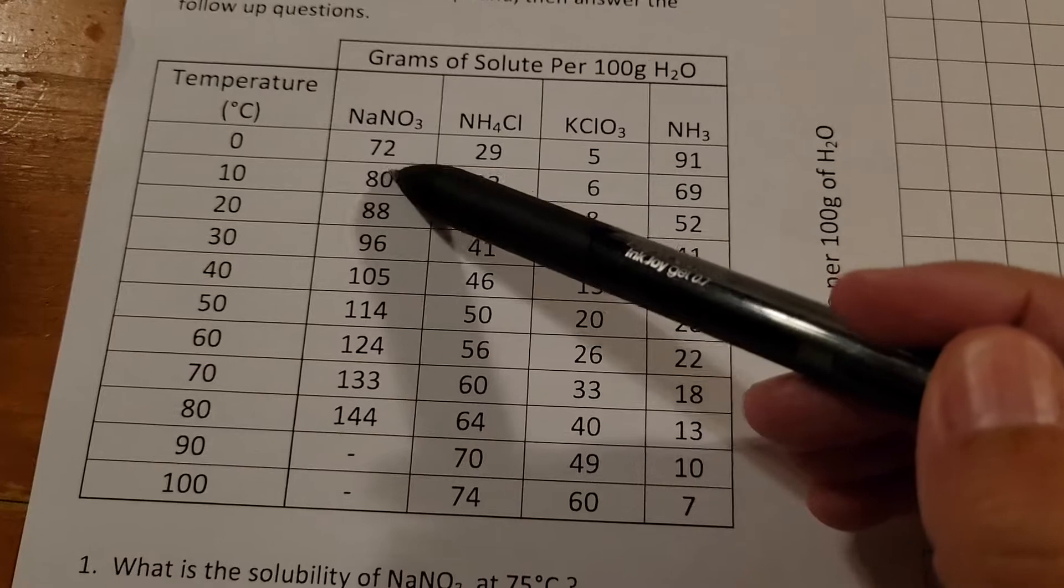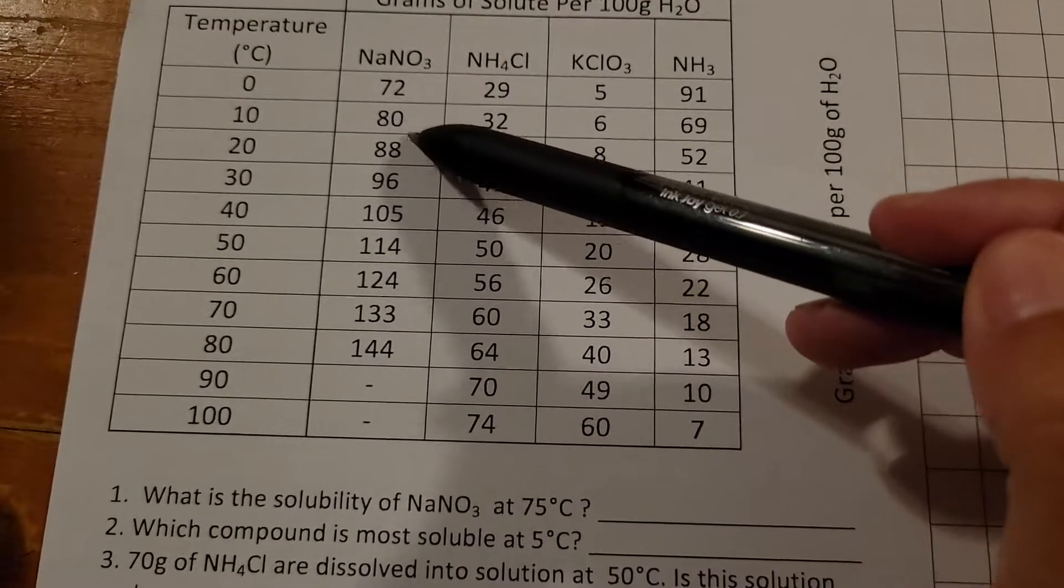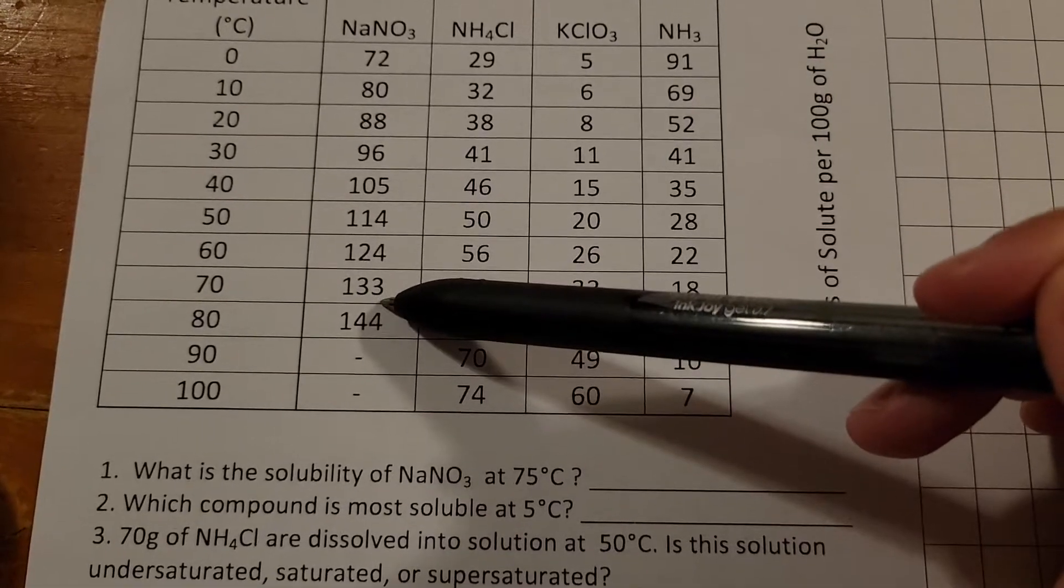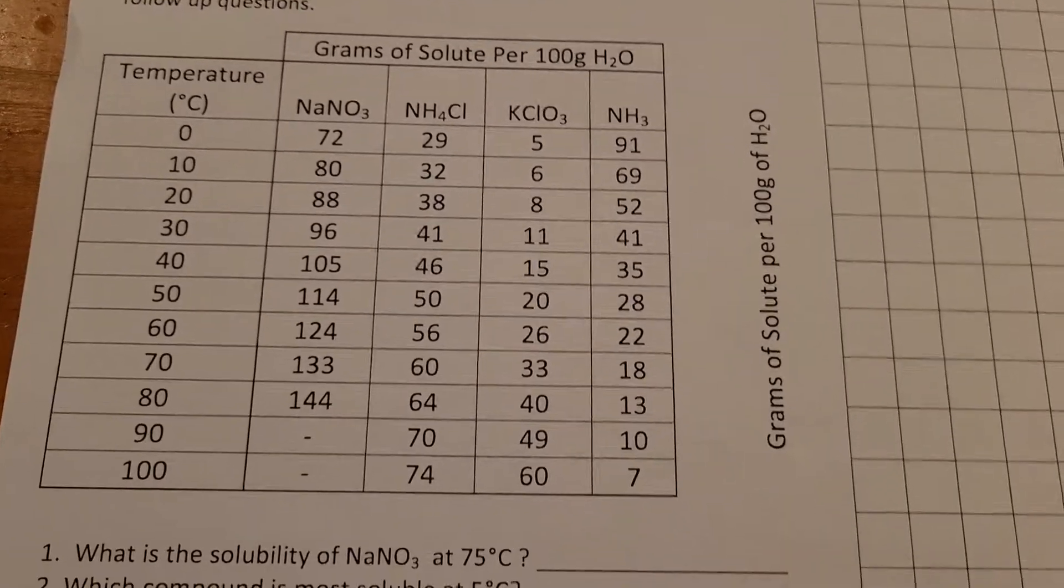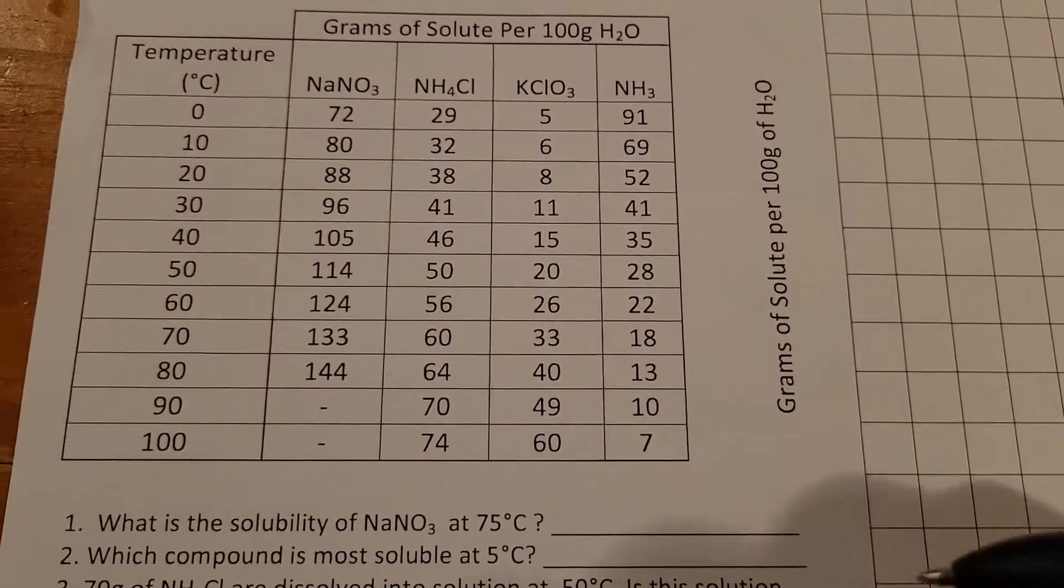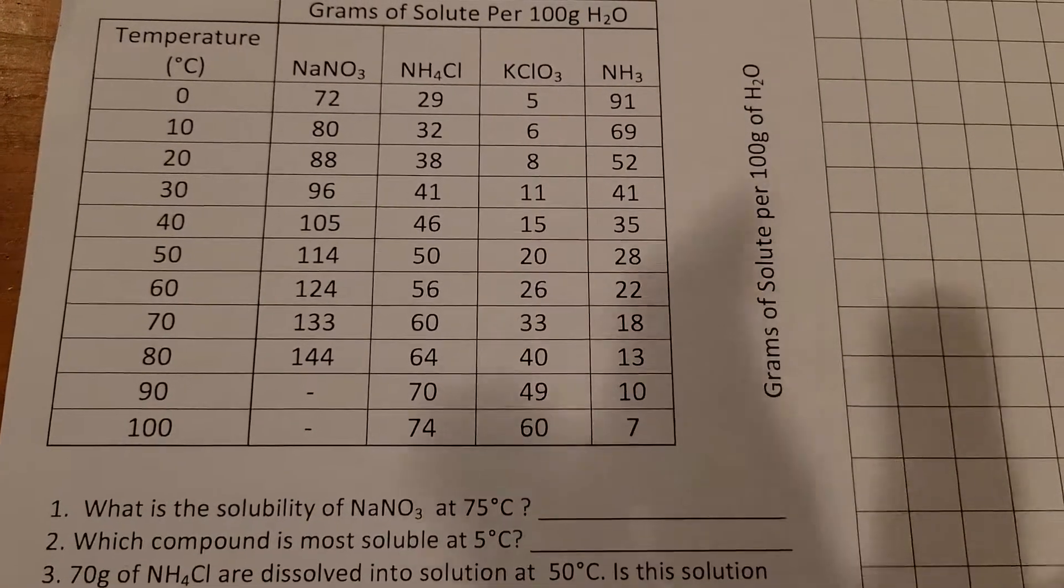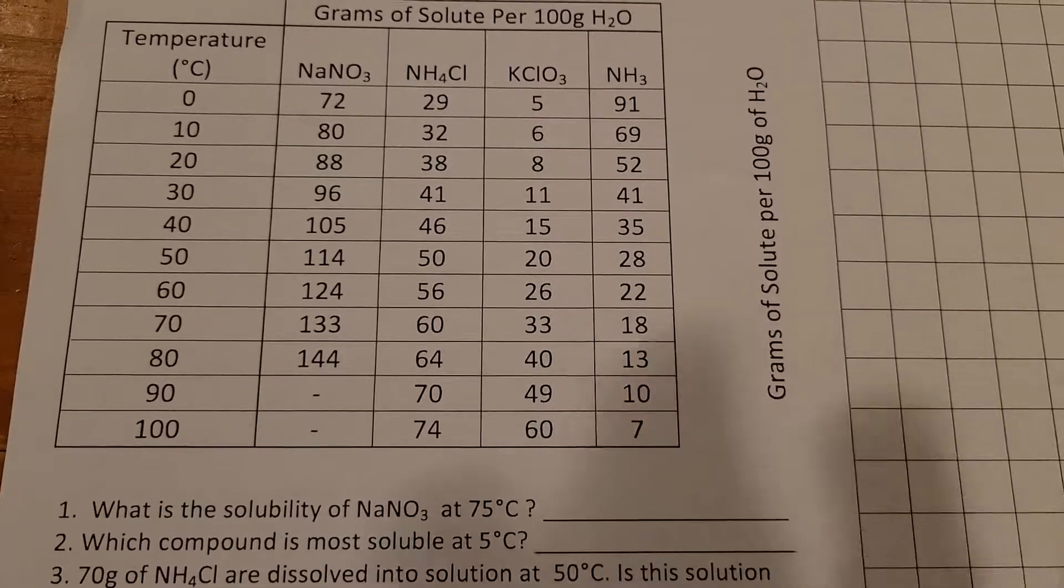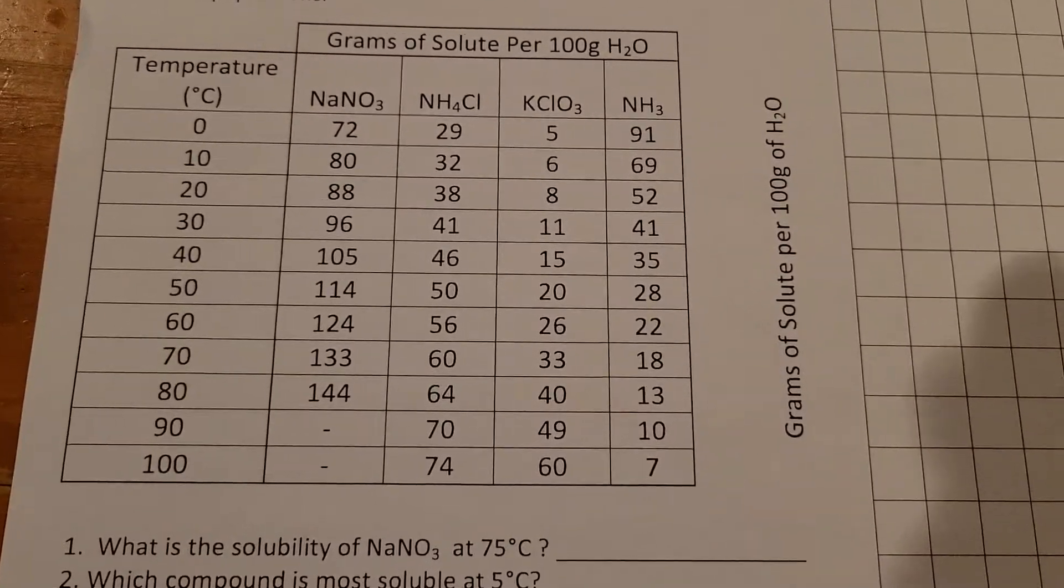You can see that for NaNO3 as I warm up the substance I'm able to dissolve more and more in there. If you think about dissolving sugar, you can dissolve a lot more sugar in hot tea than you can in iced tea. So we did the nature of the solvent, whether or not something was polar or non-polar. Now today we're going to be talking about temperature.